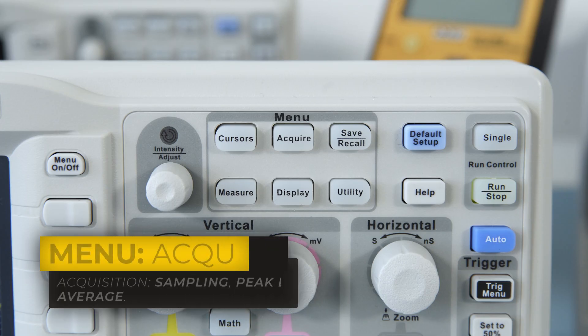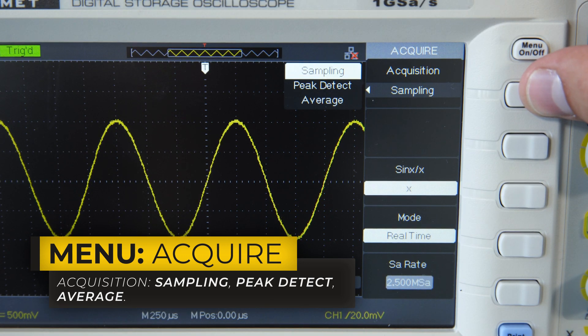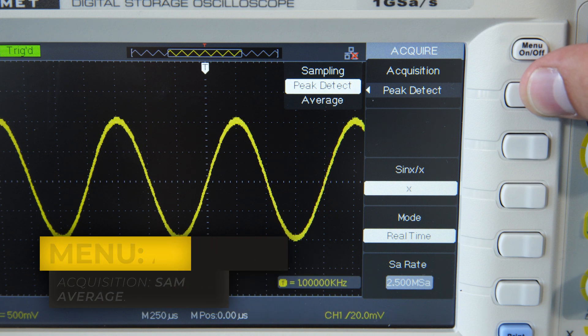It is also possible to complete the waveform acquisition using the Force button whether or not the oscilloscope detected the trigger. The DS-1000 series oscilloscopes can acquire the signal in three different ways: sampling, peak detect, and average.